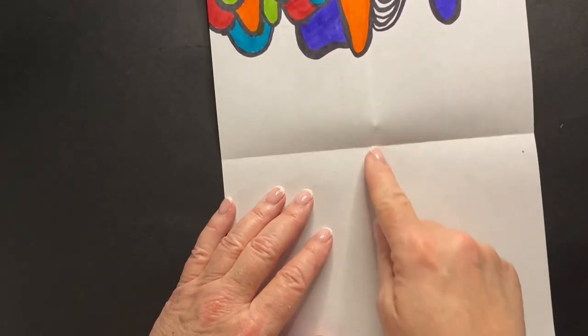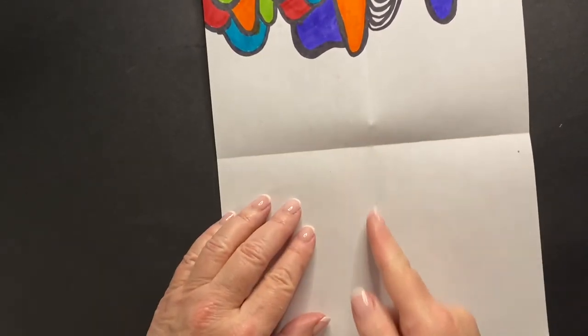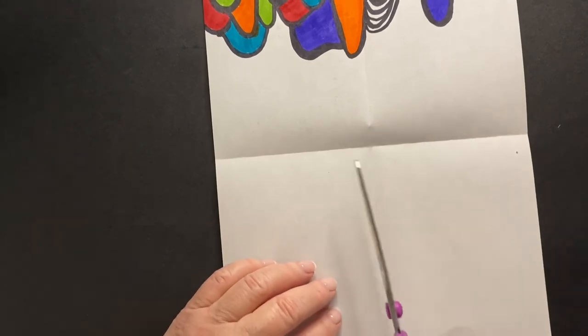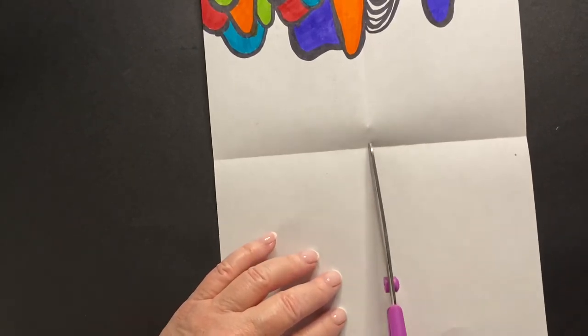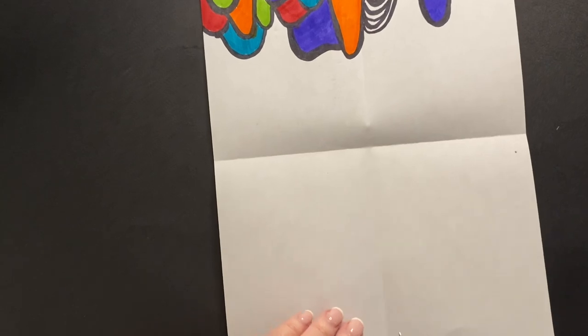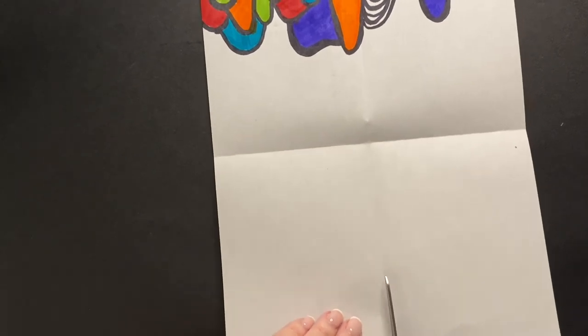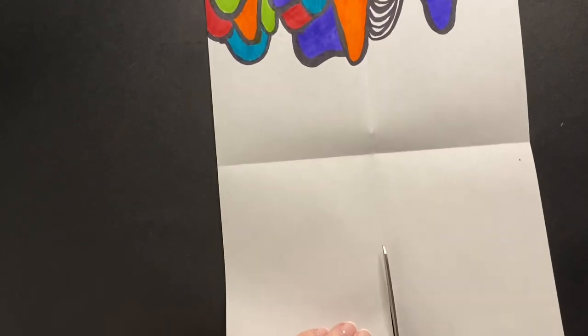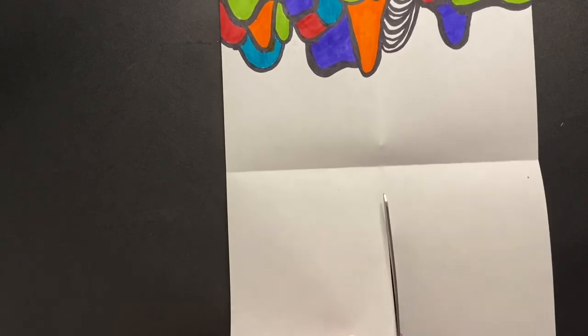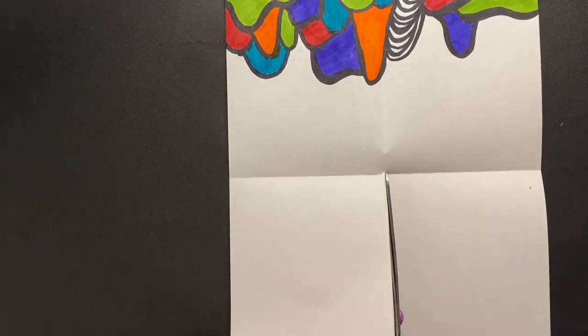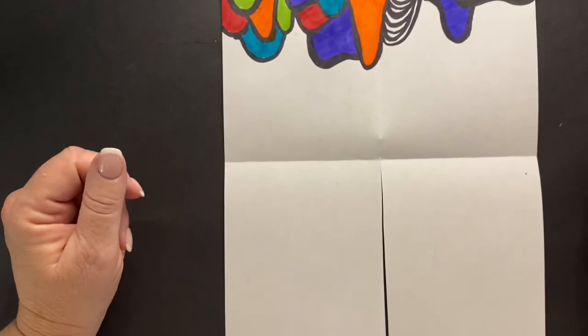One, two, three, four. These two at the bottom are separated by this fold line. On that fold line, I'm going to cut until I get to that center line. Very carefully. Right on the fold line.